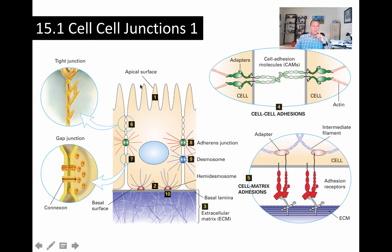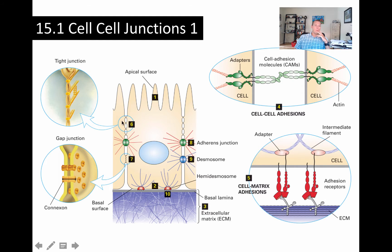Looking at the middle part of this diagram, let's start with tight junctions. These seal the spaces between cells or between body compartments. For example, if this was the lumen of the small intestine and this was connective tissue, we would want to keep the contents of the small intestine from accessing down into the body cavity. So tight junctions seal the spaces between cells and prevent fluid movement between tissue compartments.